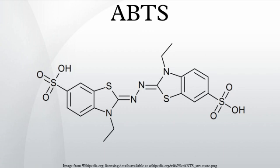ABTS is also frequently used by the food industry and agricultural researchers to measure the antioxidant capacities of foods. In this assay, ABTS is converted to its radical cation by addition of sodium persulfate. This radical cation is blue in color and absorbs light at 734 nm. The ABTS radical cation is reactive towards most antioxidants including phenolics, thiols, and vitamin C. During this reaction, the blue ABTS radical cation is converted back to its colorless neutral form. The reaction may be monitored spectrophotometrically.